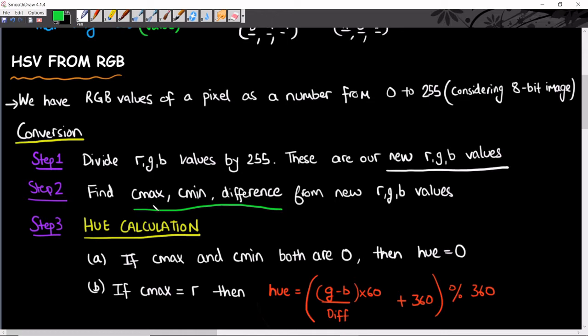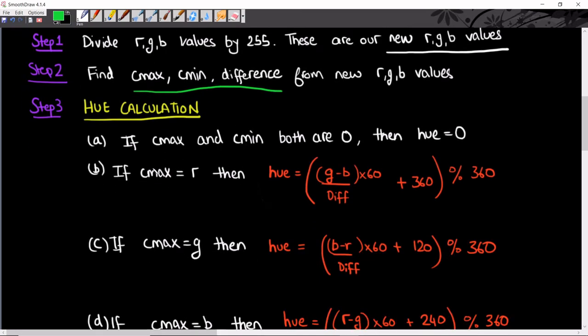Next, I'll be calculating the hue. There are four conditions to calculate hue. First, if C max and C min both are 0, then your hue is 0. If C max is your red color after dividing by 255, then use the corresponding formula.